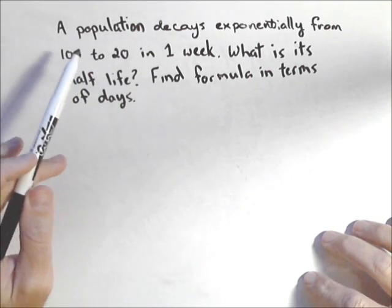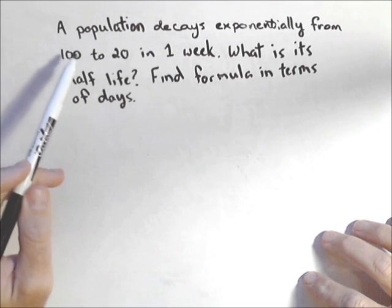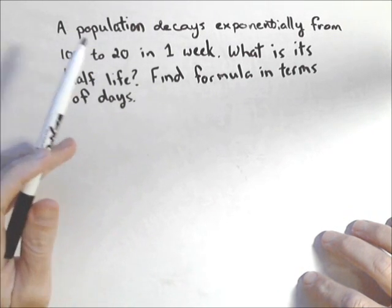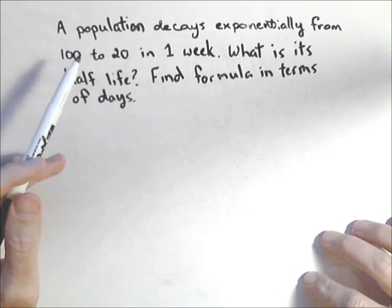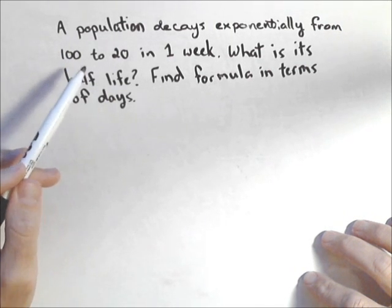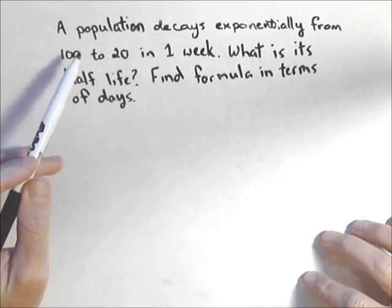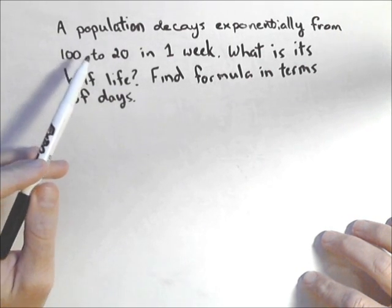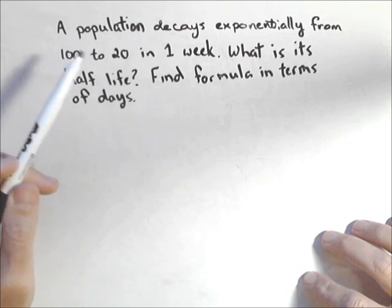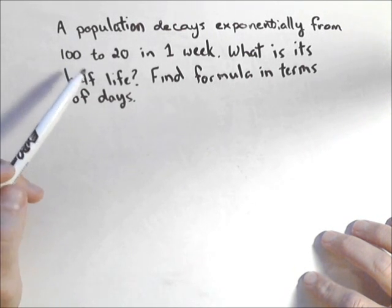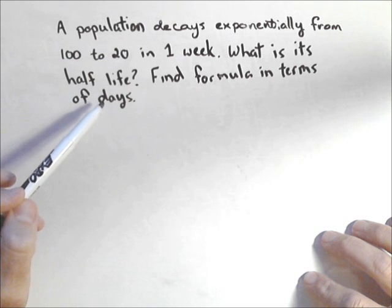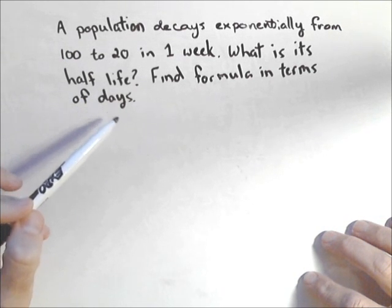So the population decays exponentially from 100 to 20 in one week — whatever the units are, whether grams or something else depending on what you're dealing with. We're going to find its half-life and get a formula in terms of number of days.